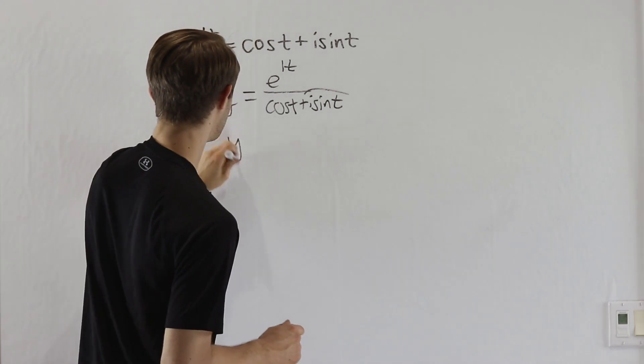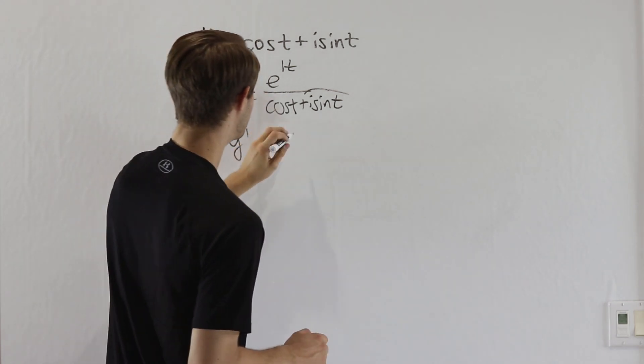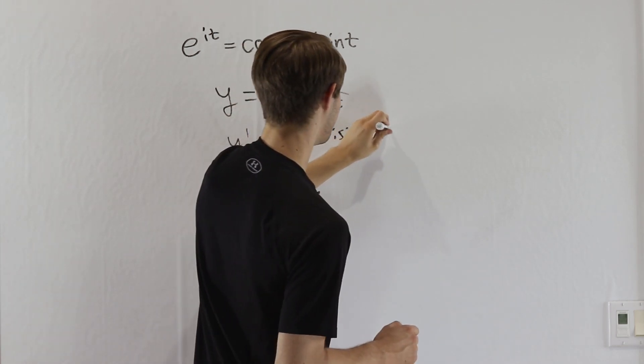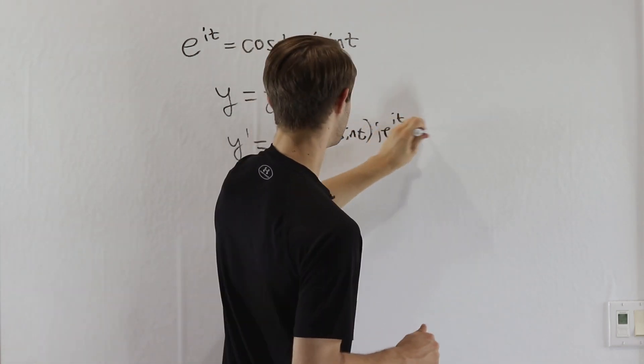If we take the derivative, then we get y prime equals, by the quotient rule, first we have the bottom cosine t plus i sine t. Then the derivative of the top is going to be i e to the it by the chain rule, then we do minus.